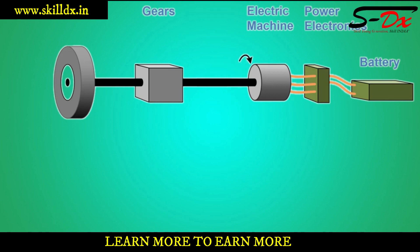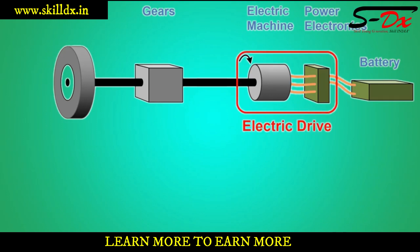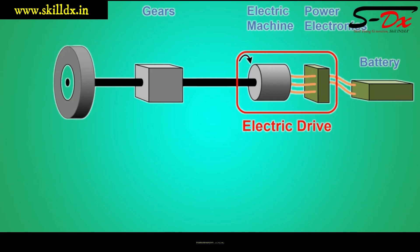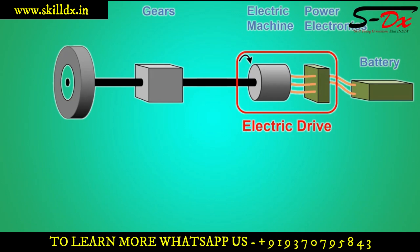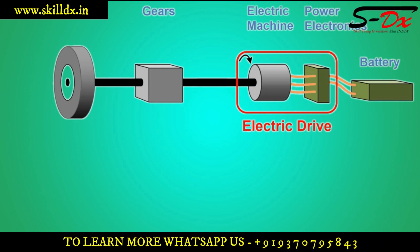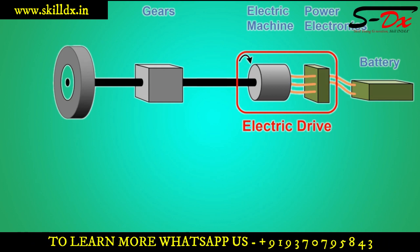Then we get this layout of the battery electric powertrain. To simplify the system, we can from the system perspective combine the electric machine and power electronics into one subsystem called the electric drive system. Or sometimes we will simply call it the electric machine and just assume that the power electronics is a part of it.